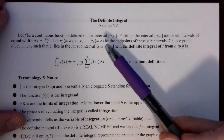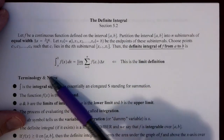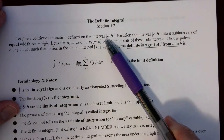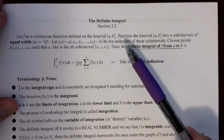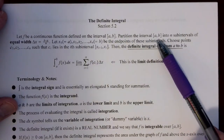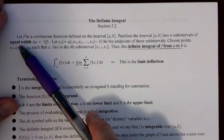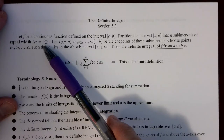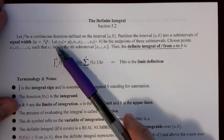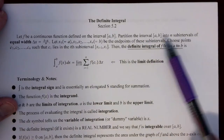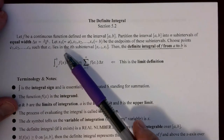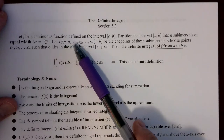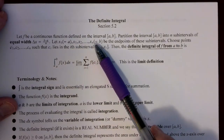Here's the definition of what we mean by the definite integral. First, we start with a function f that's continuous and defined on a closed interval from a to b. We're going to partition the interval [a, b] into n subintervals with equal width, so delta x is the length of the interval: b minus a divided by n. This is what we had last time.